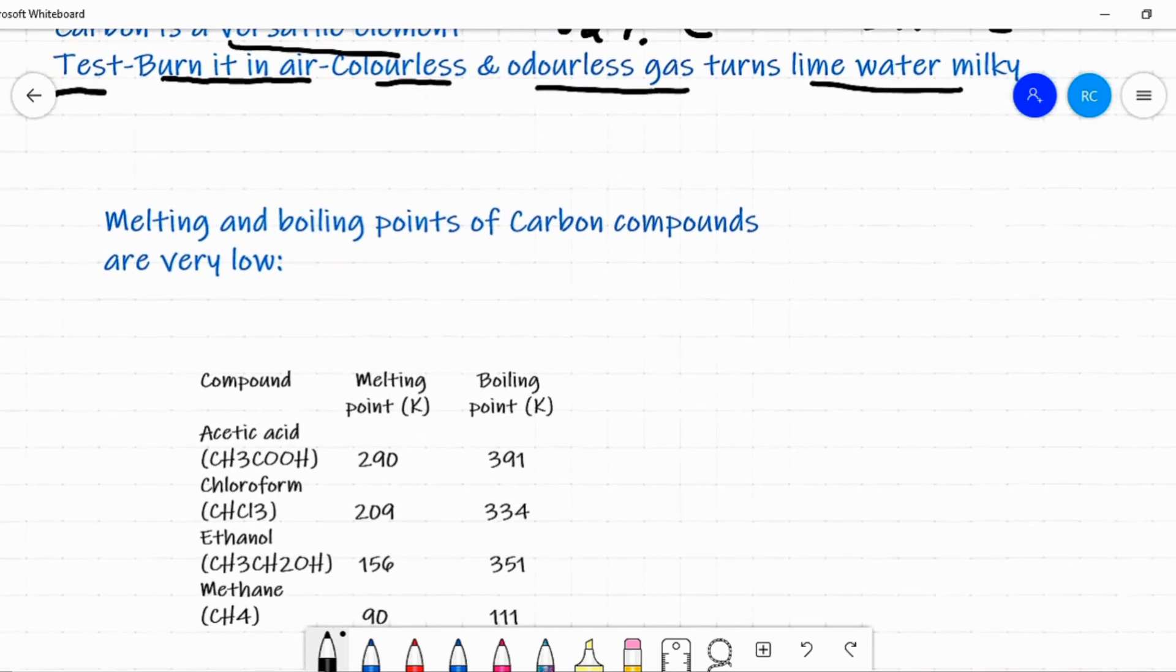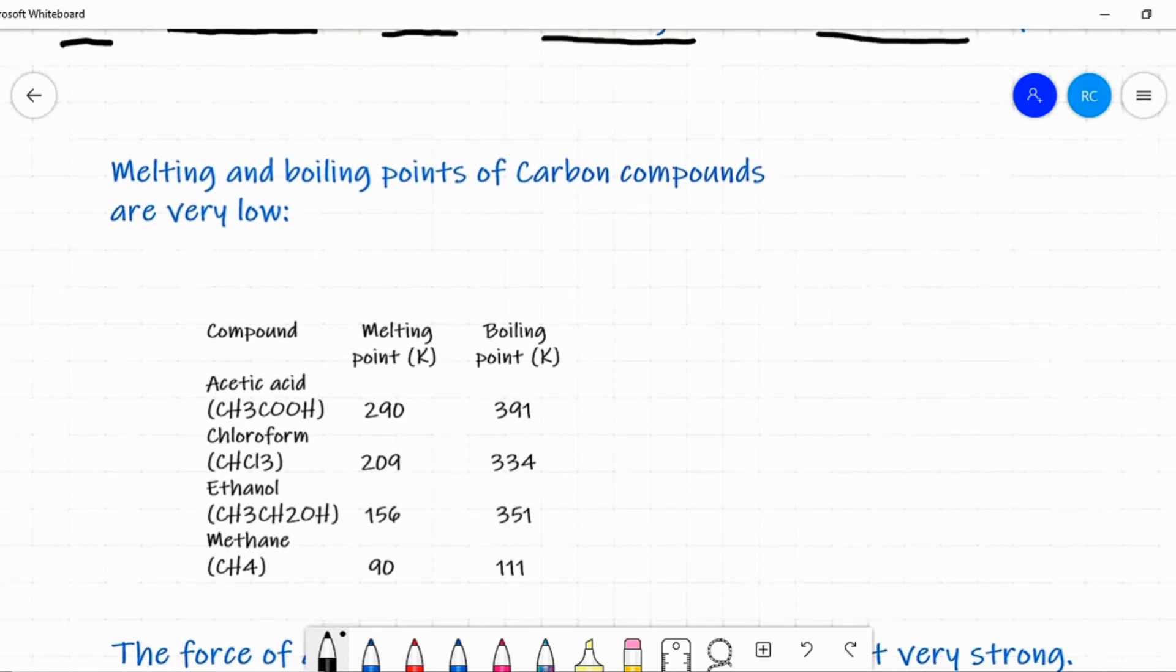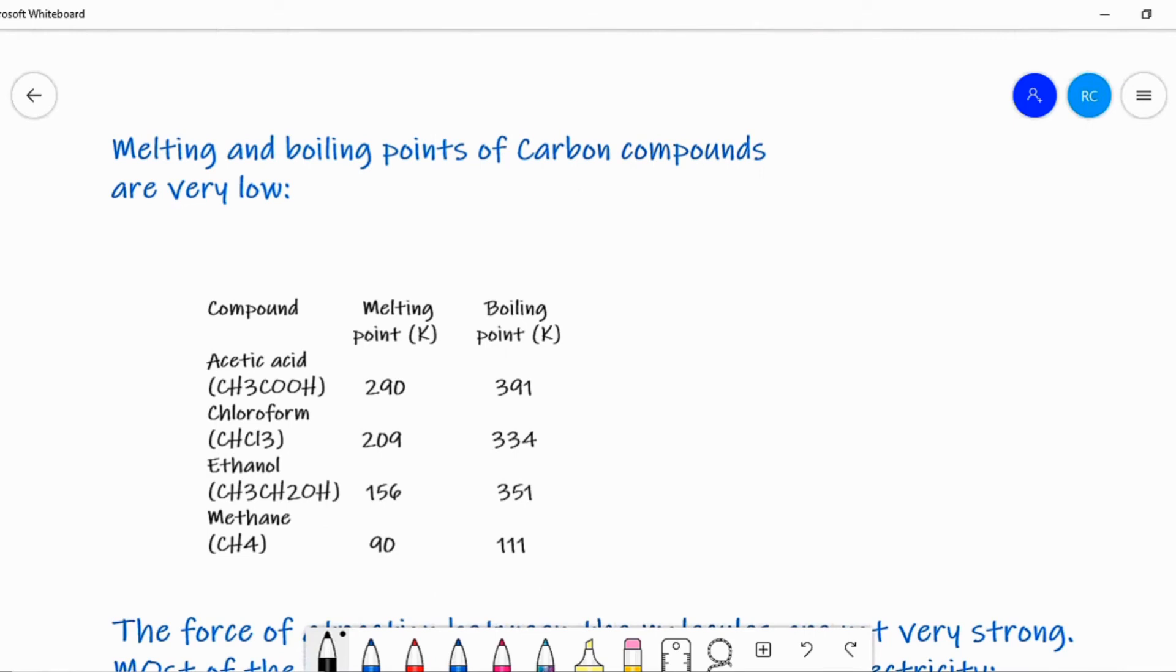Usually the melting and boiling points of carbon compounds are very low. If you look at the table, you can understand that. The melting point of acetic acid (CH3COOH) is 290 and its boiling point is 391. Then if you look at chloroform, CHCl3, the melting point is 209 and the boiling point is 334.